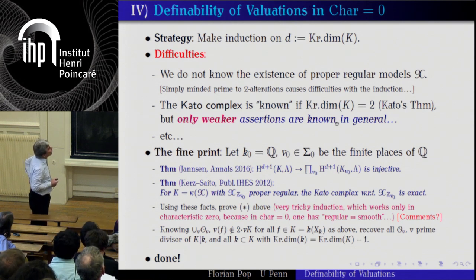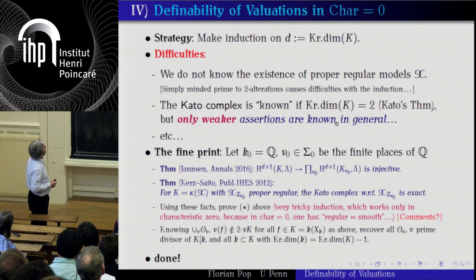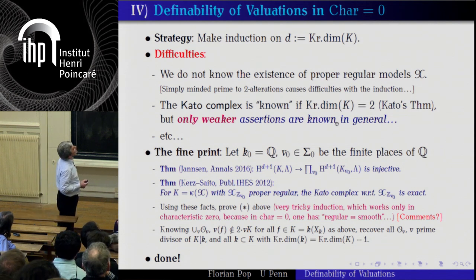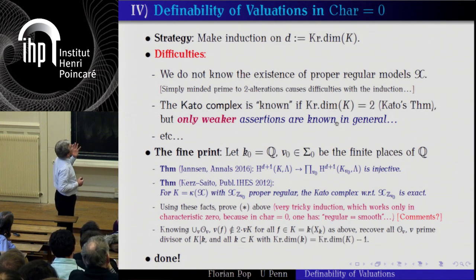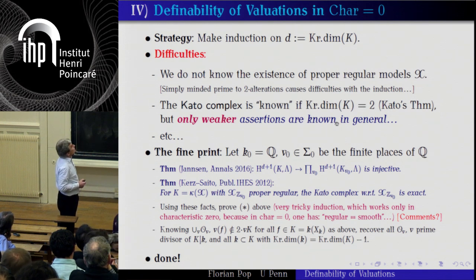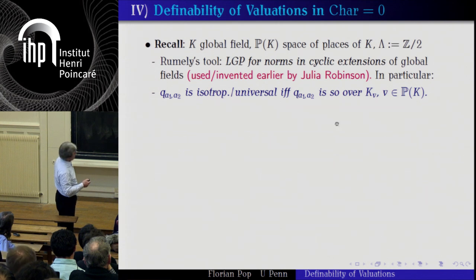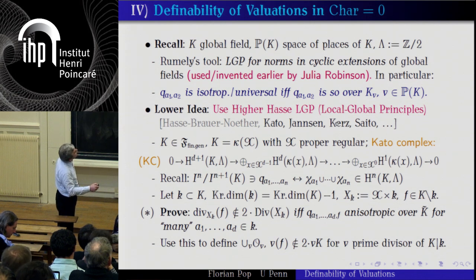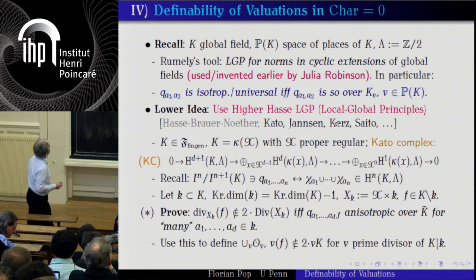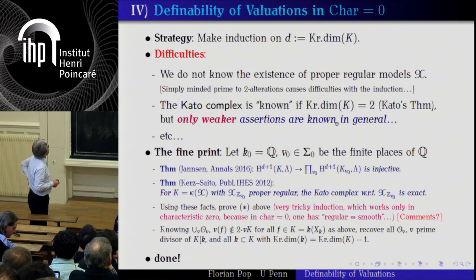There is a previous result by Saito which shows: suppose you take a model such that when you localize at some V₀, some prime P, it becomes a proper regular model. For that, Jansen-Saito proved the Kato complex is exact. Then using these facts and some tricky induction, this is the point where one has to yield and say: I'm sorry, I cannot do things in characteristic p — because the induction on the construction does not work in positive characteristic.